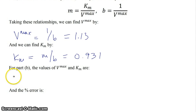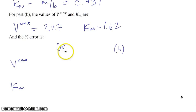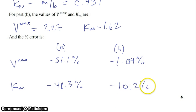What I have here is for part B I have Vmax equals 2.27 and for Km equals 1.62. These aren't too far off, they're a lot better than what I got for these values here. The percent error for each case, what I'm going to do here is I'm going to draw a little table for that. In part A the percent error would be here, so for Vmax it was minus 51.1%, for Km it was minus 48.3%. For part B the error was much smaller, for Vmax it was minus 1.09% and for Km minus 10.2%.